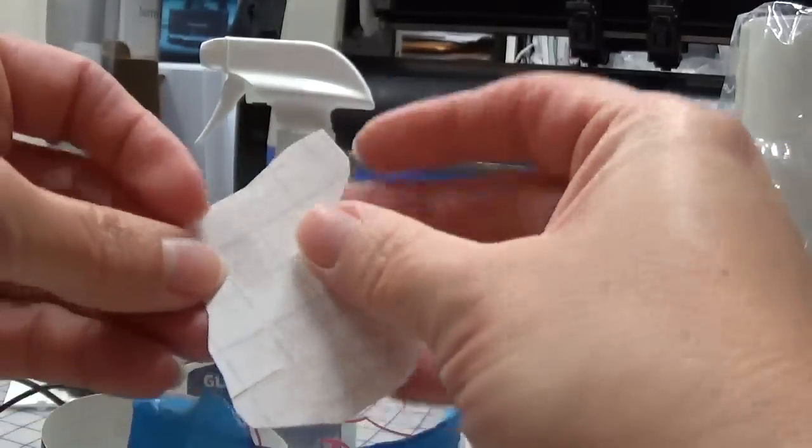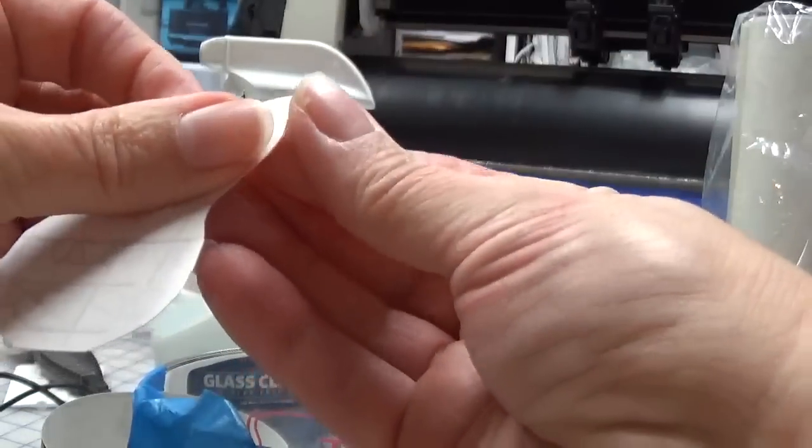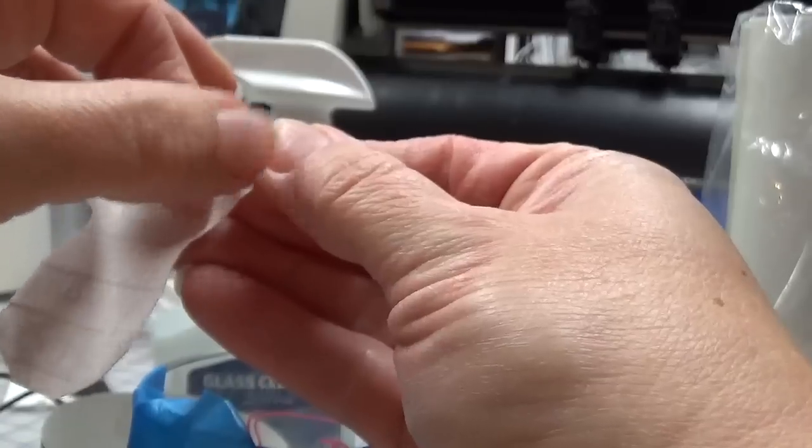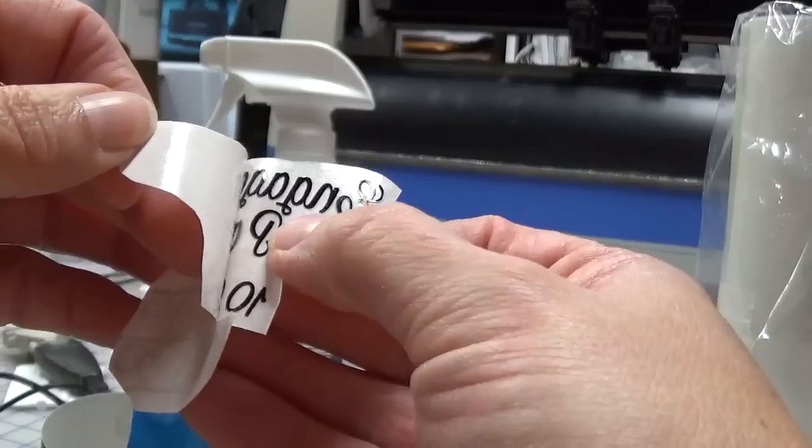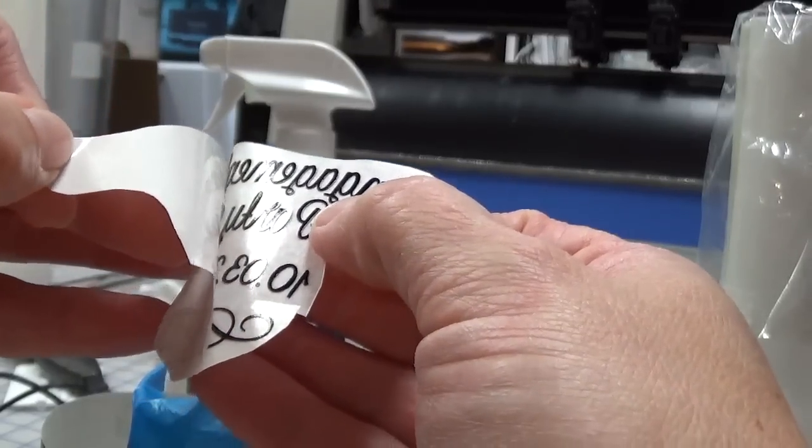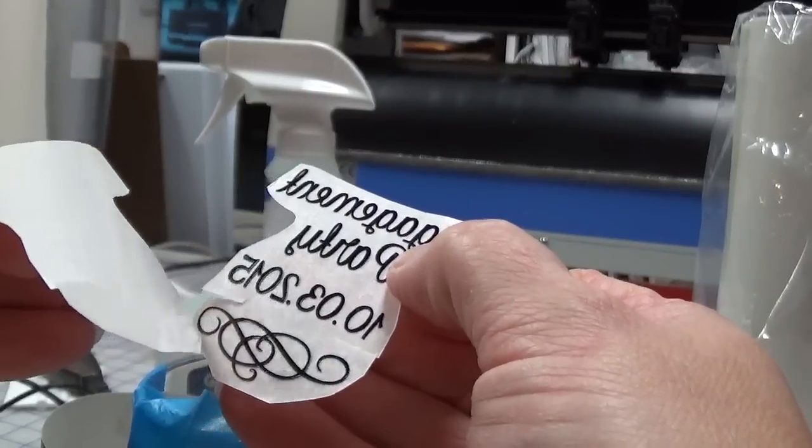Now I'm going to flip it over. I'm going to peel off the backing paper, making sure that the letters are sticking to my tape and not to the backing paper. I just do it slow and careful.